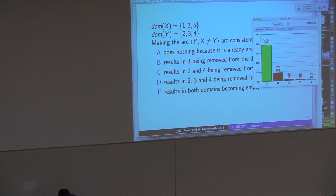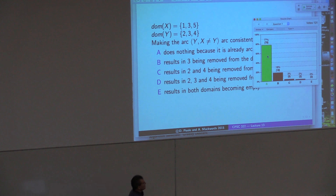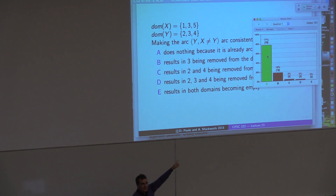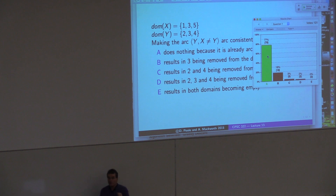A is the right answer. Why didn't everyone get A? We're not going to remove 3 from Y because there is a value for X for which 3 is legal. So B is not right — if you look at 3, we can't remove 3 from Y because there is a value for X, namely X = 1, that makes 3 a valid, possible answer for Y. So the answer is A.